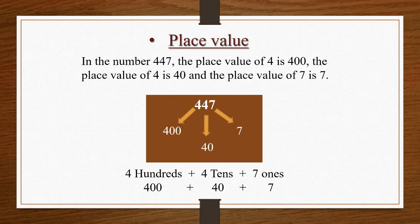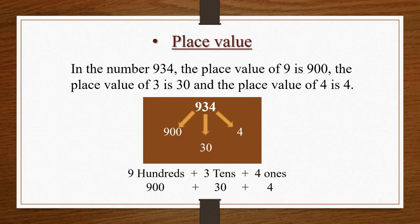Here the next example. The number is 447: 4 hundreds plus 4 tens plus 7 ones. In the number 447, the place value of the first 4 is 400, the place value of the second 4 is 40, and the place value of 7 is 7. Now the next example: the number is 934, that is 9 hundreds plus 3 tens plus 4 ones. In 934, the place value of 9 is 900, the place value of 3 is 30, and the place value of 4 is 4.